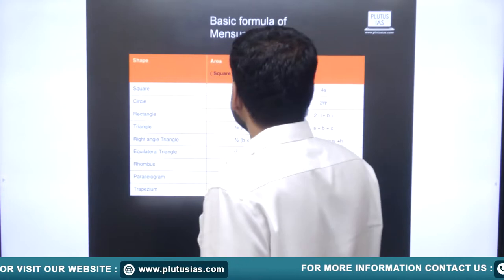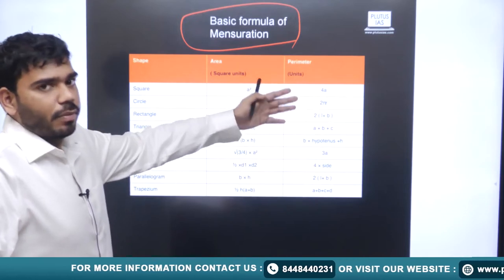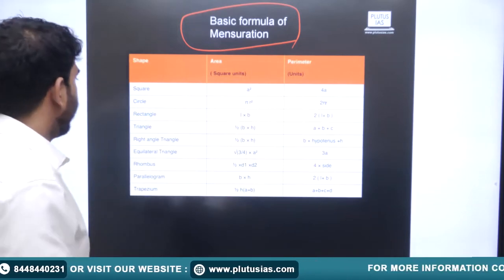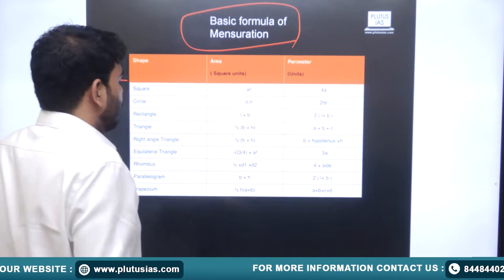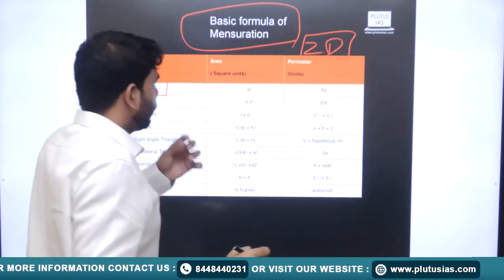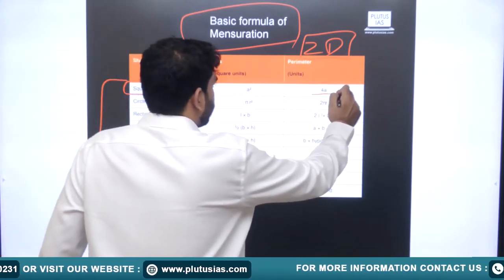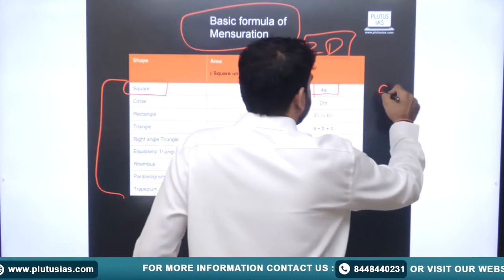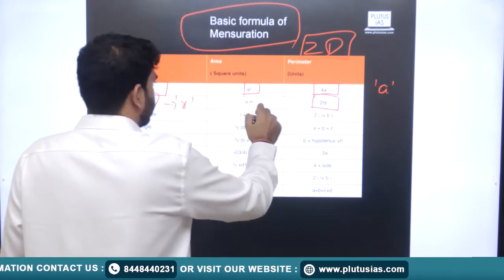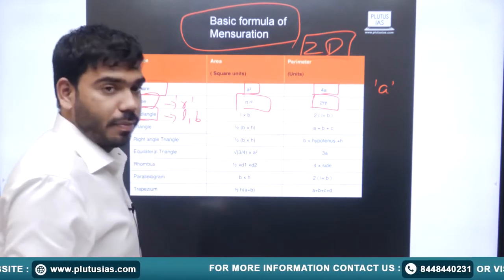Let's start today's session. These are some basic formulas of mensuration — expected knowledge from class 8 to class 12. I've put these in the slides for revision purposes only. The first set covers 2D figures. For a square, the perimeter is 4a and the area is a² where a is the side length. For a circle with radius r, the perimeter is 2πr and the area is πr².